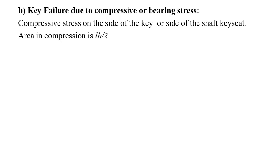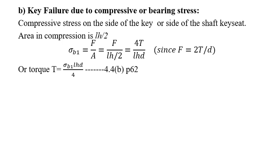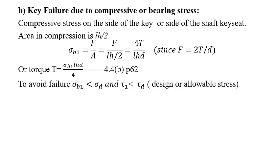Key failure due to compressive or bearing stress: Compressive stress on one side of the key or side of the shaft keyseat can be calculated using this equation. Area in compression is lh/2, and the stress σb1 = F/A = F/(lh/2) = 4T/(lhd), since F = 2T/d. Or torque T = σb1lhd/4, equation 4.4(b) page 62 in Bhandari design data handbook. To avoid failure, σb1 < σd and τ1 < τd, the design or allowable stress. This is a check we need to do in the problem.